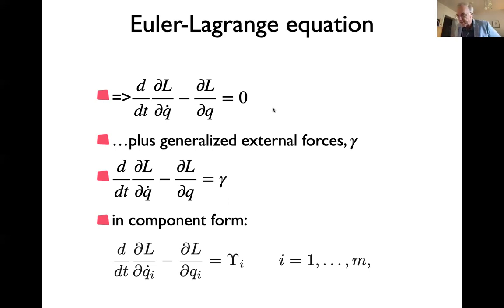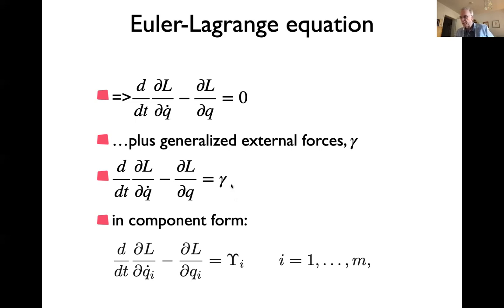We use the equation in a slightly different form where we add so-called generalized external forces — not zero on the right-hand side, but some external forces — because we're applying this to robot arms that have torque motors. The physical meaning of these generalized forces depends on the generalized coordinates used. When we use joint angles, these generalized forces turn out to be torques applied to the joints.